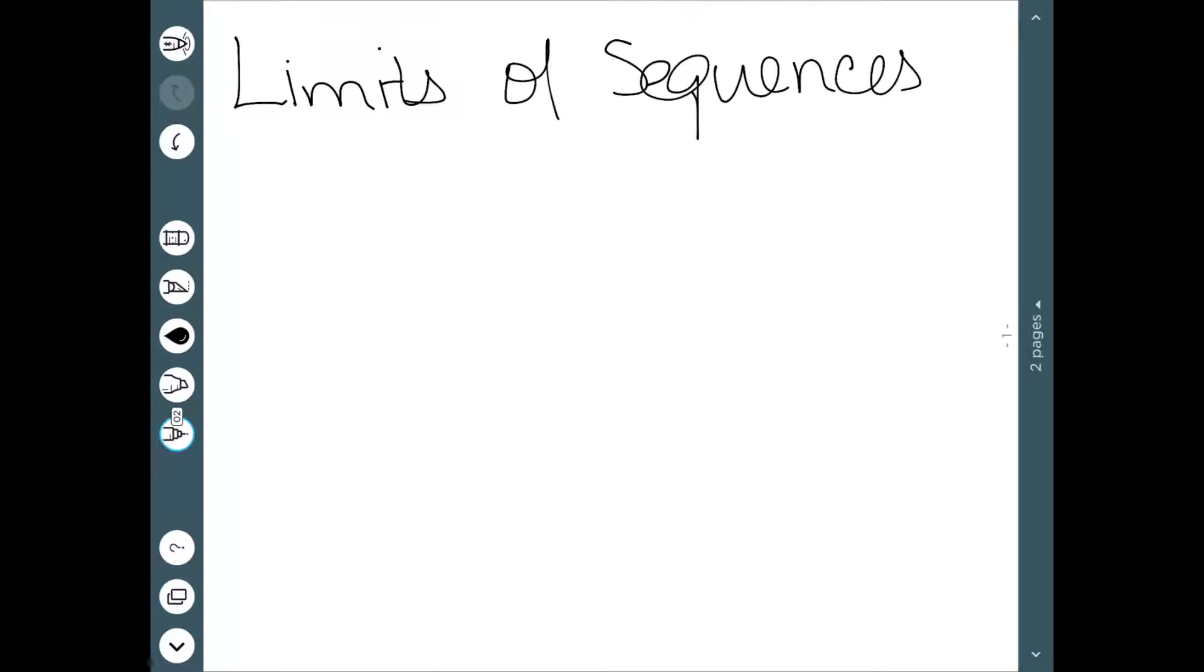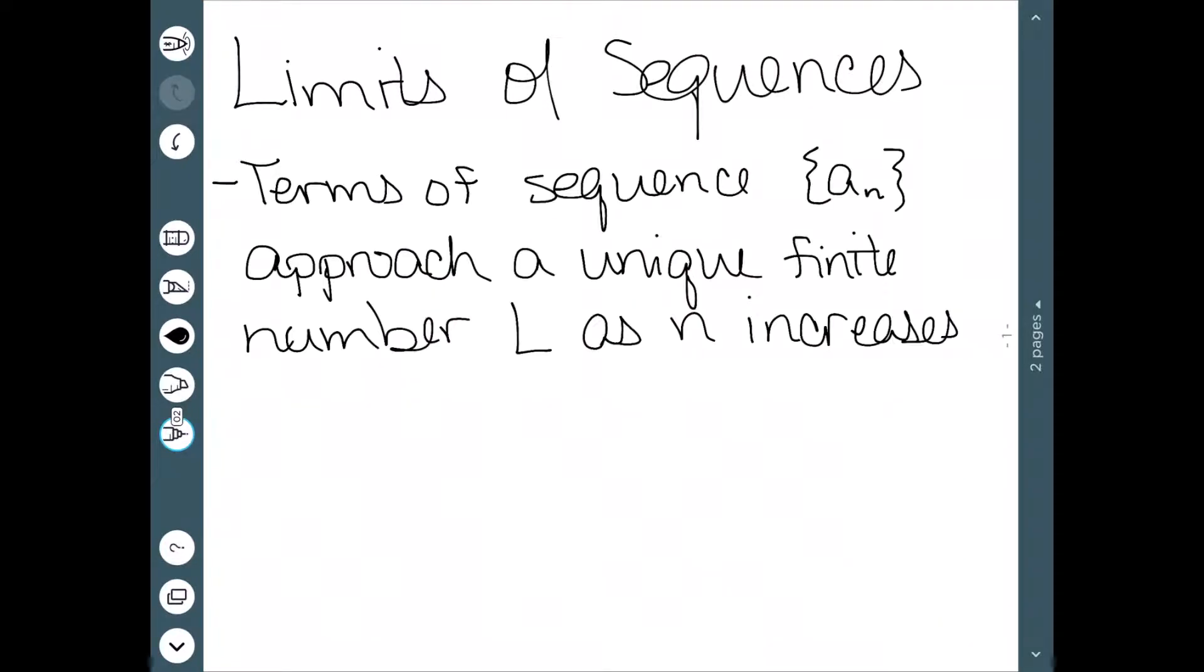We'll now give an introduction to limits of sequences. So it is possible for a sequence to have a limit. A limit of a sequence means that the terms of a sequence a sub n approaches a unique finite number L as n increases. So it's exactly what you would expect a limit to be. We usually write this as the limit as n goes to infinity of a of n equal to L. And let's do a few examples.